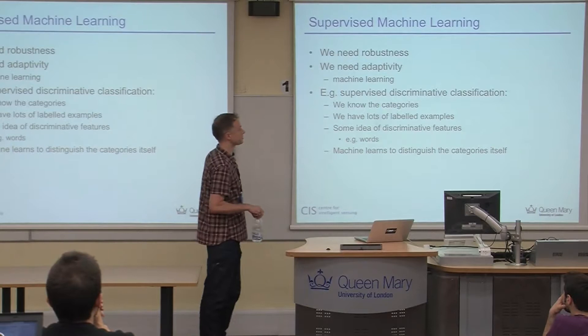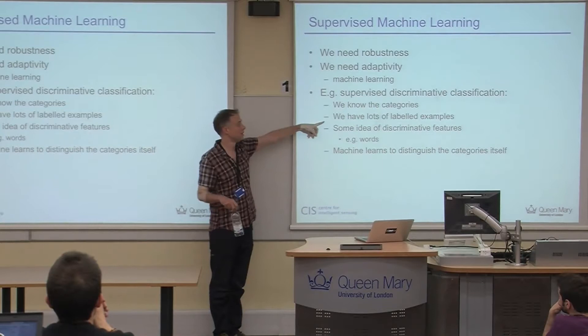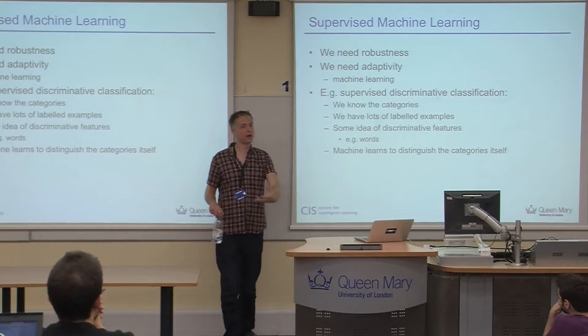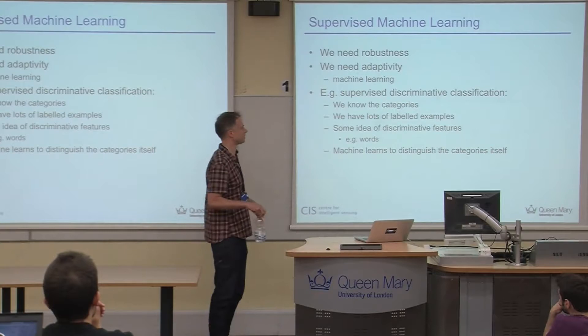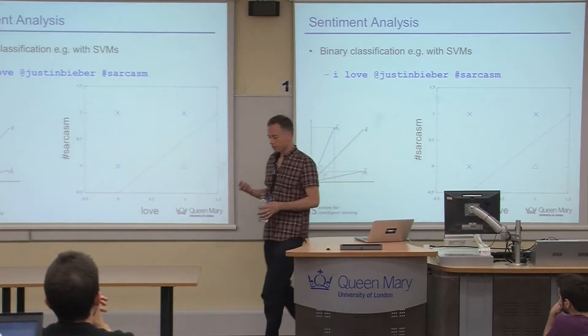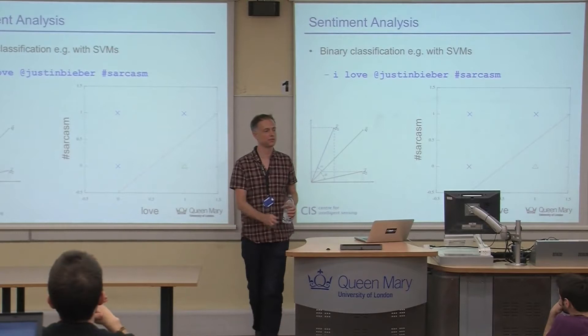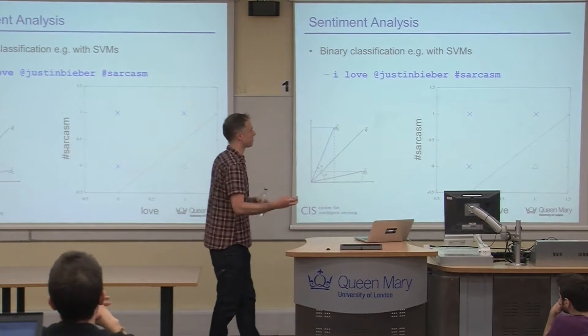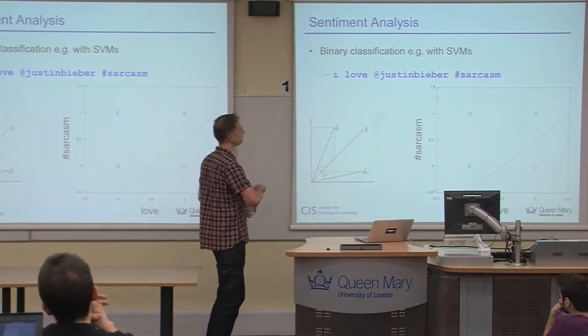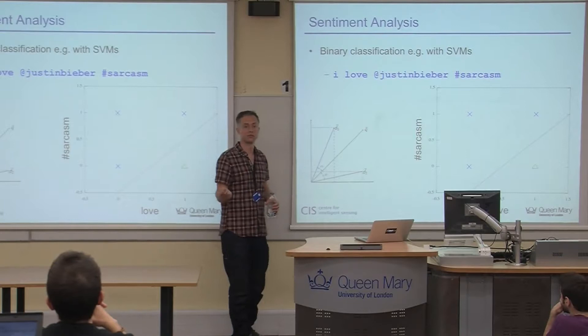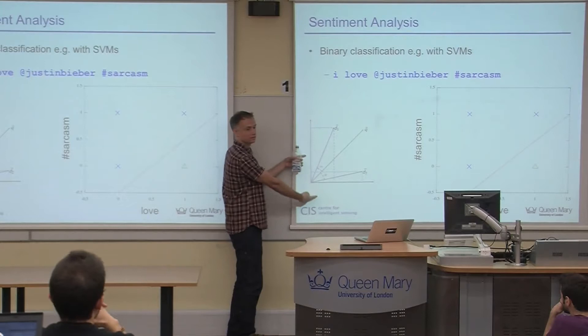You can characterize text roughly as vector spaces and apply machine learning over those representations. If we've got a simple problem we can cast as discriminative classification — we know what categories we're trying to classify things into, we have some labeled examples, and we have some idea of what the features might be — then we can teach our machine to distinguish these categories. Such a problem is sentiment analysis: given some language, we want to know if someone is being positive or negative about something.